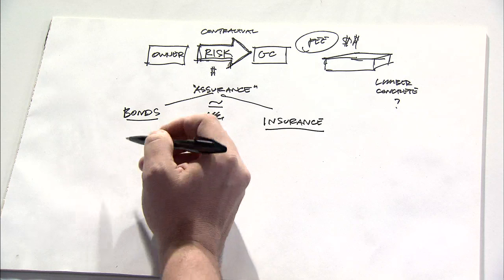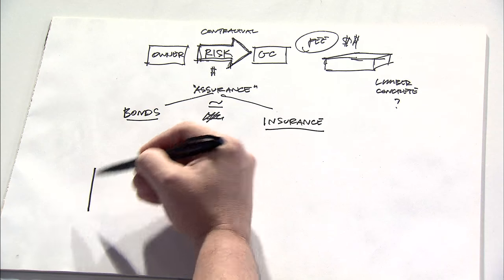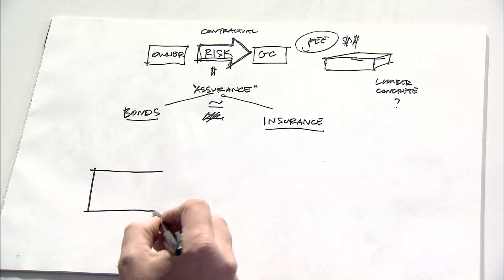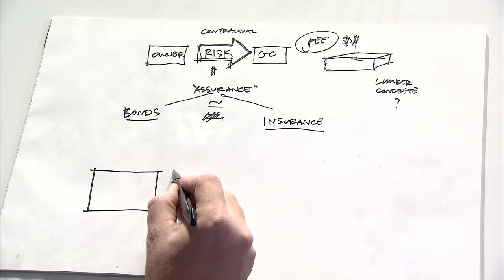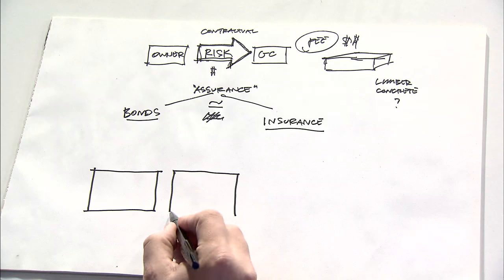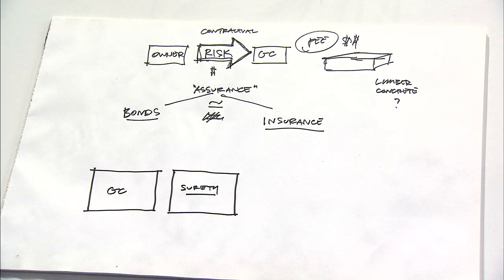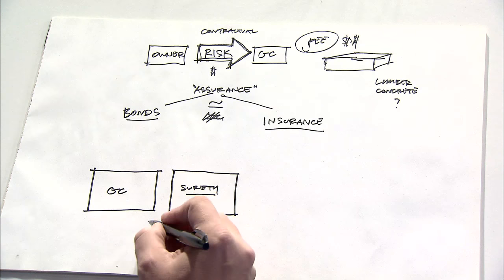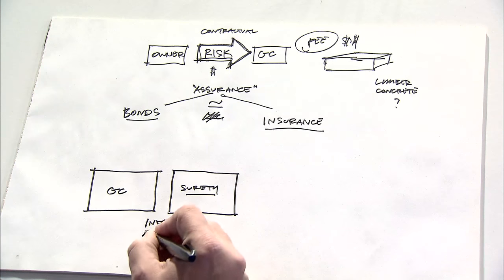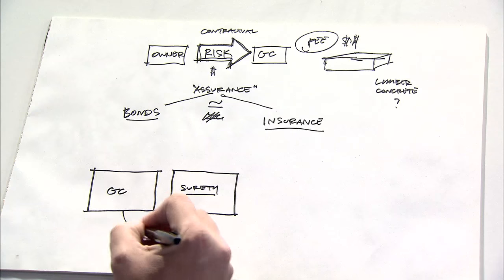Now, looking at some of the fundamental differences, first of all, let's talk about bonds. Bonds are functionally a three-party agreement. And the baseline proposition that happens is that there is some sort of relationship between a contractor and a surety. And by surety, I mean the entity that's going to consider providing a bond for the contractor.